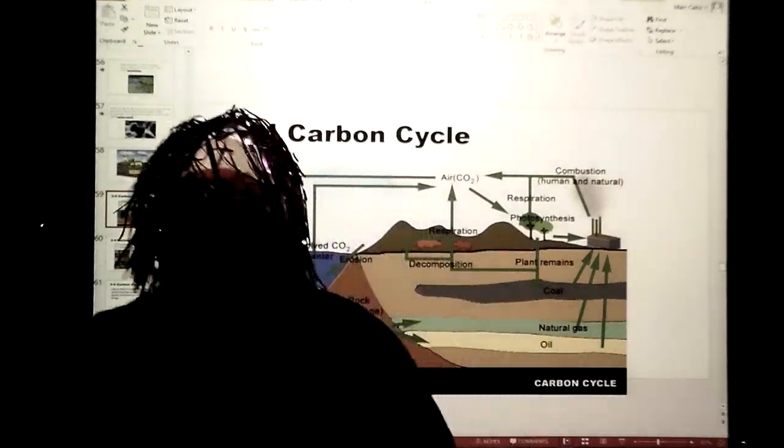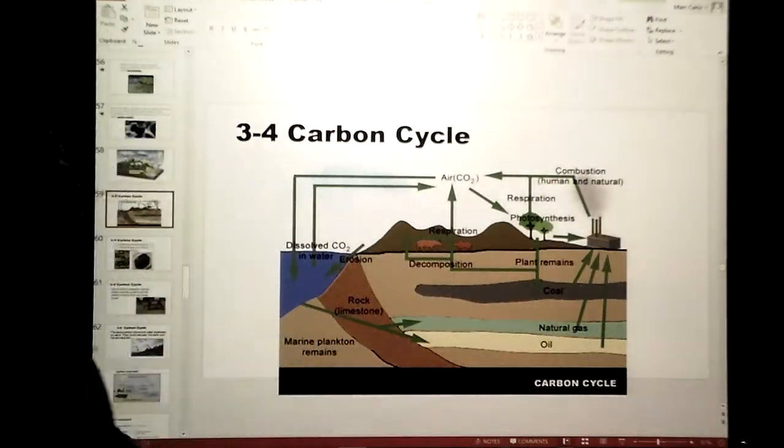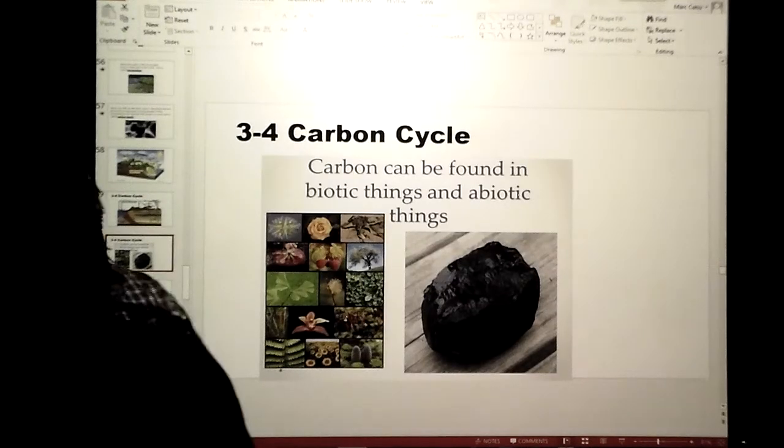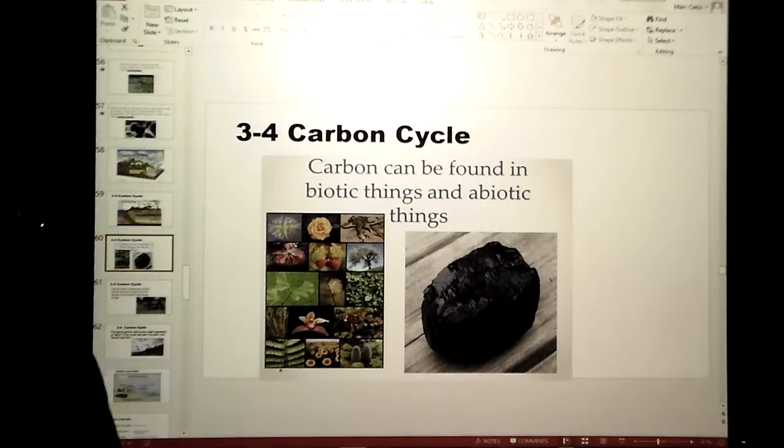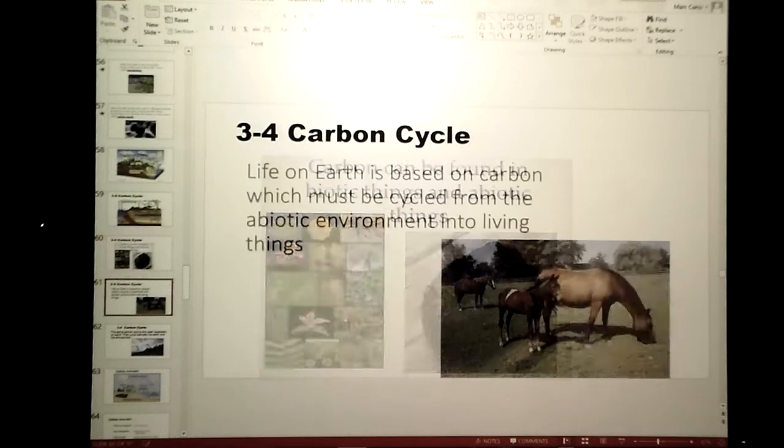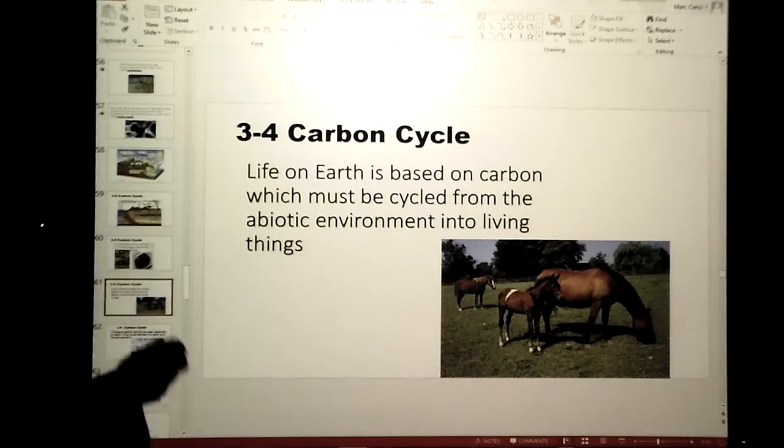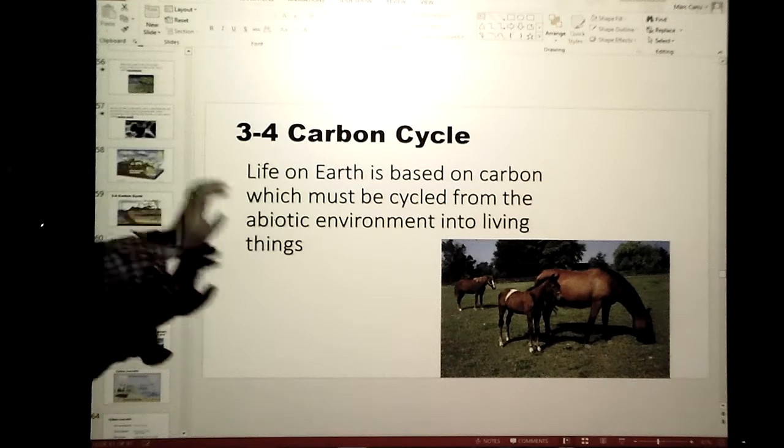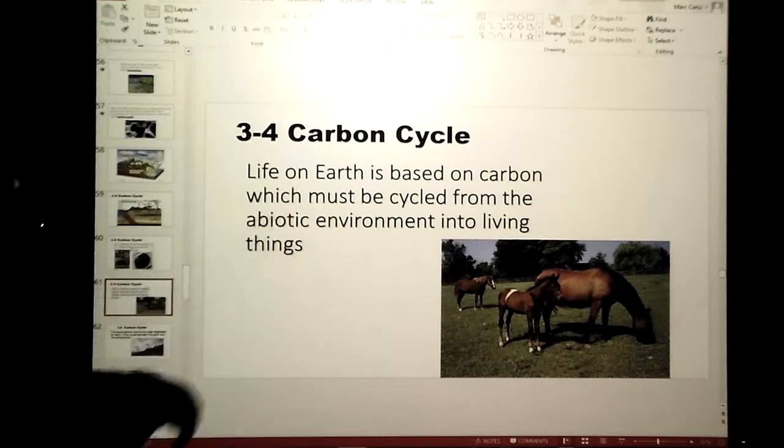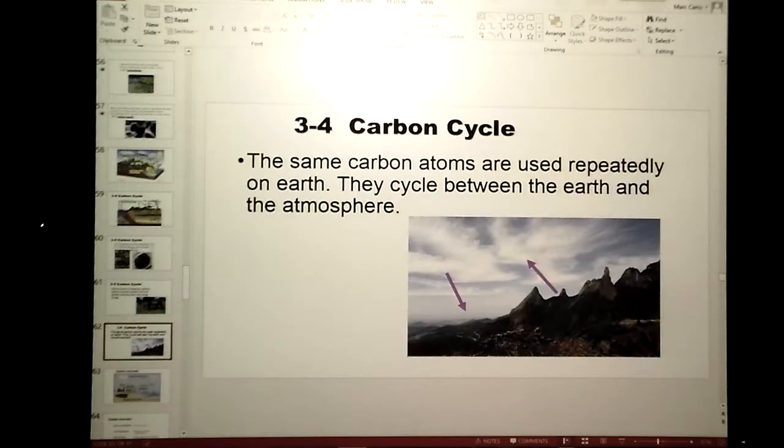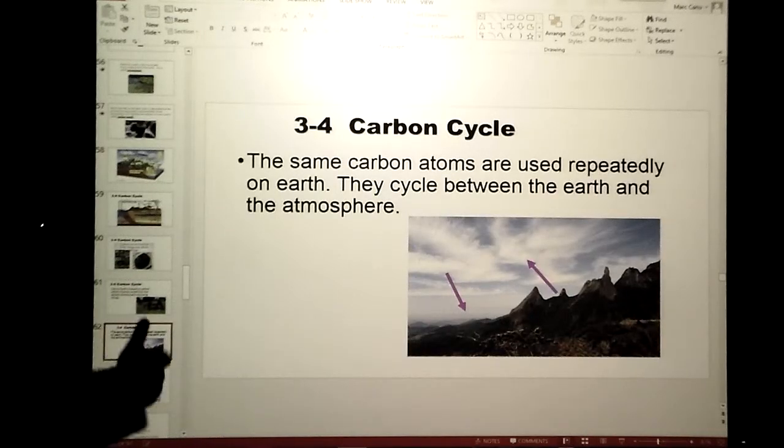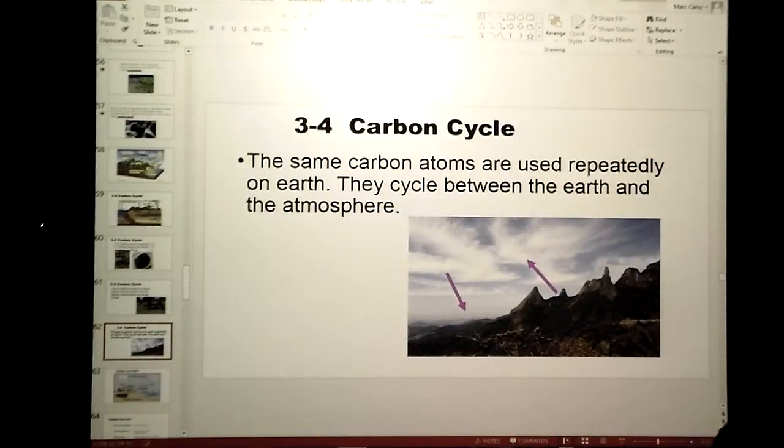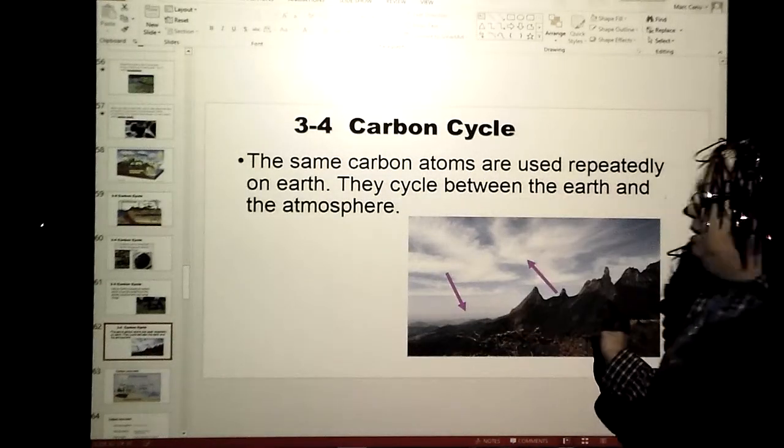We're going to look at the carbon cycle. Carbon is found in both living and non-living things. Life on earth is based on carbon. The cycle has to happen from the non-living, the abiotic, into the living things. Those same atoms of carbon get to be used over and over again, so literally they're cycling between the earth and the atmosphere.